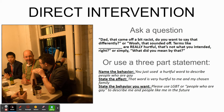The next possible intervention is to use a three-part statement, which is a great way to set boundaries. You name the behavior: 'You just used a hurtful word to describe people who are gay.' State the effect: 'That word is very hurtful to me and my chosen family.' And then state the behavior you want: 'Please use LGBT or people who are gay to describe me and people like me in the future.' You can substitute any kind of behavior in here — it's a great way to set a boundary.